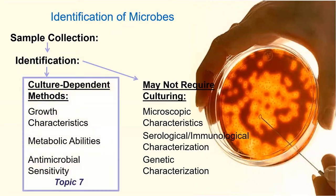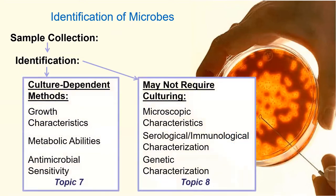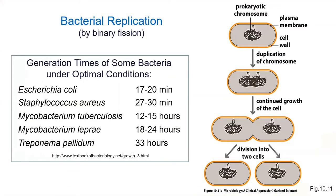We're focusing today on topic seven — culturing. Topic eight will cover microscopy and related methods. The nice thing about bacteria is that they grow quickly — I can grow up a strep throat sample overnight easily, do a Gram stain, and have results within 24 hours.